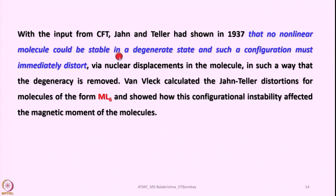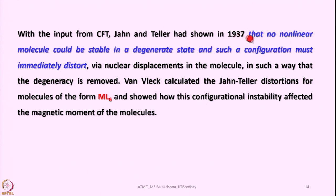With input from crystal field theory, Jahn and Teller showed in 1937 that no non-linear molecule could be stable in a degenerate state and that such a configuration must immediately distort. This is more pronounced for dx²-y² and dz² orbitals since they lie along the direction of approach of ligands, especially in octahedral geometry, where molecules with uneven or odd numbers of electrons are affected.